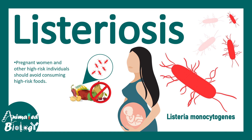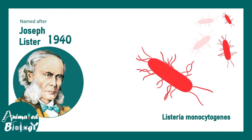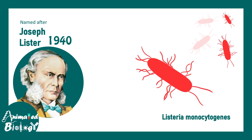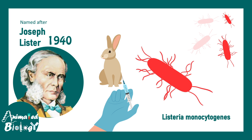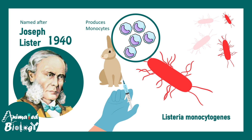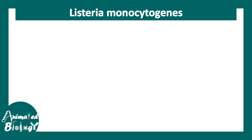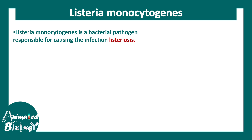In this video we'll be talking about Listeriosis and its symptoms. Listeriosis is caused by the bacteria known as Listeria monocytogenes. It was described by Joseph Lister in the 1940s, and it was found that when this bacterial extract is injected in a rabbit it induces formation of monocytes. From the name of Joseph Lister and this phenomenon of increased monocytes, it was known as Listeria monocytogenes, a bacterial pathogen responsible for Listeriosis.